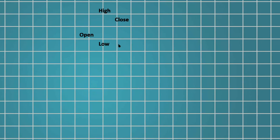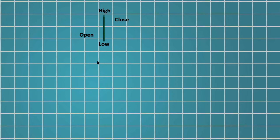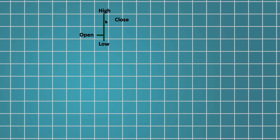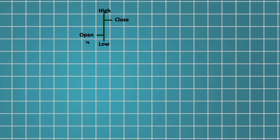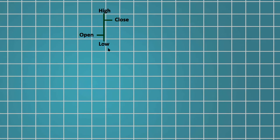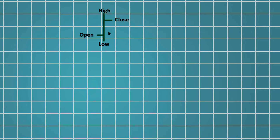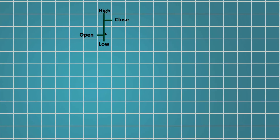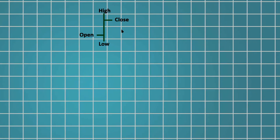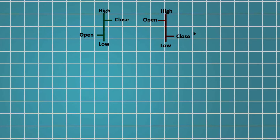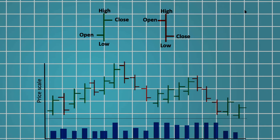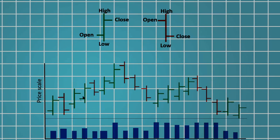Moving on to bar charts. These are a bit more detailed. Bar charts display the opening and closing prices, as well as the highs and lows. The vertical bar shows the trading range, with the bottom indicating the lowest price and the top showing the highest. Hash marks on the left and right display the opening and closing prices.